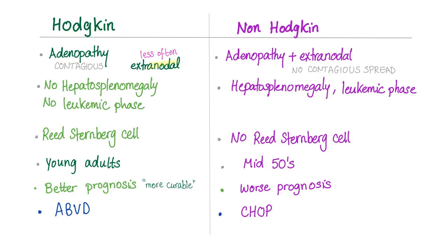Quick comparison between Hodgkin's and non-Hodgkin's: Hodgkin's has adenopathy with contiguous spread; non-Hodgkin's has adenopathy plus extra-nodal spread with no contiguous spread. Hodgkin's usually has no hepatosplenomegaly or leukemic phase; non-Hodgkin's more commonly has both. Hodgkin's has the Reed-Sternberg cell; non-Hodgkin's does not. Hodgkin's affects young adults; non-Hodgkin's mid-50s. Both are more common in males. Hodgkin's has a better prognosis and is more curable. Hodgkin's is treated with ABVD; non-Hodgkin's with CHOP.